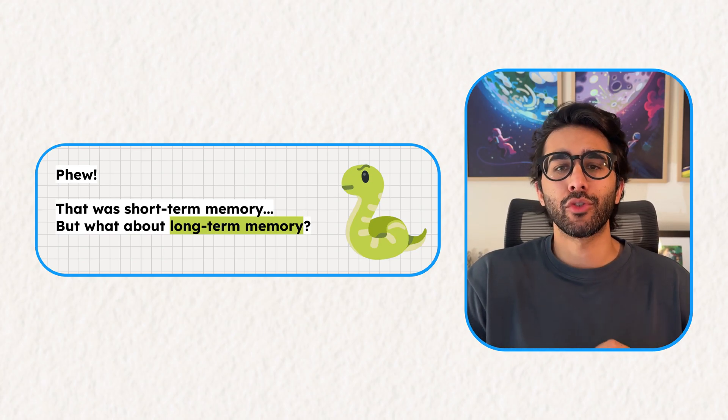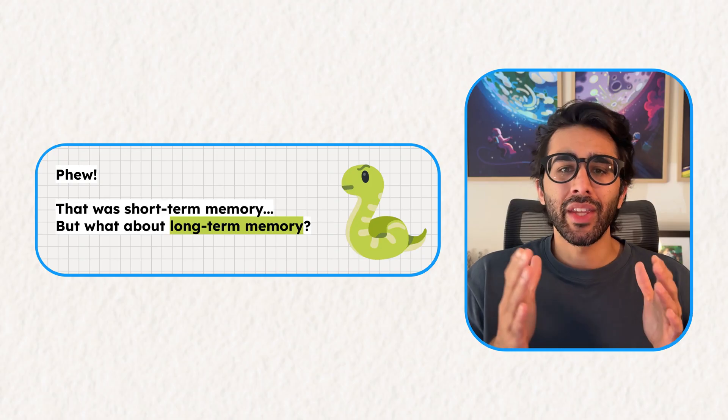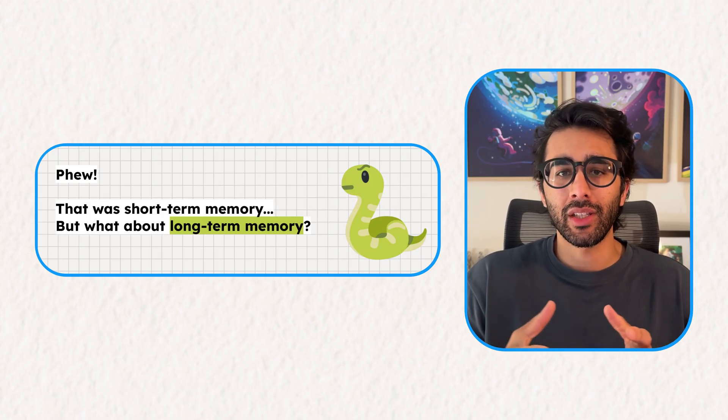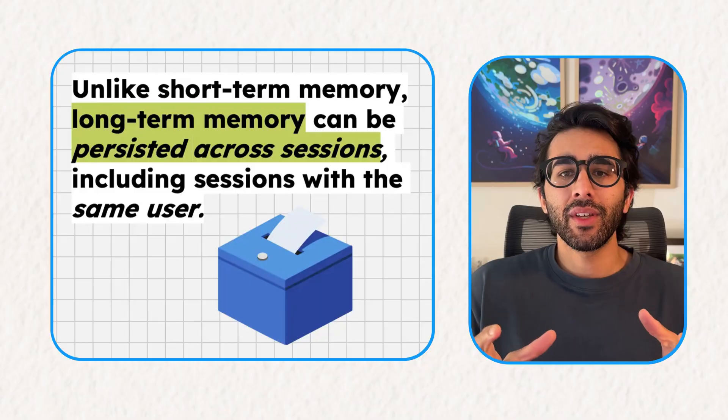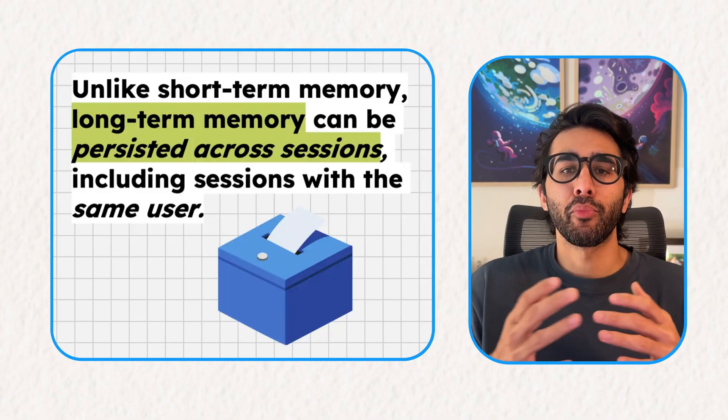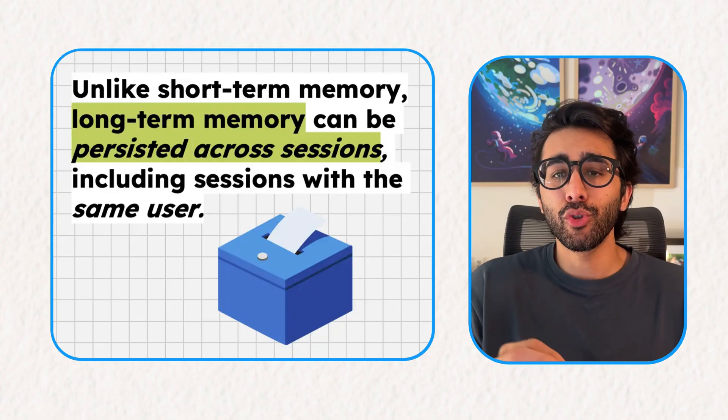What if we wanted our agent to actually have long-term memory? How can we make our agent remember a user's score the next time they come back, or topics they've been having challenges with historically while learning Python? When you come back tomorrow to continue learning Python, a new session with a new ID is created and the temporary scratch pad is gone. To solve this, we need long-term memory so the agent can have context from previous interactions and provide a truly personalized experience for our learners.